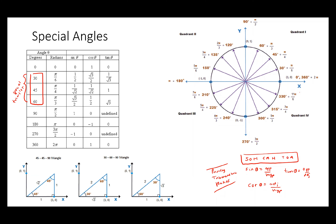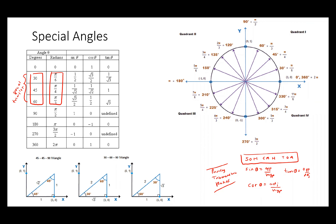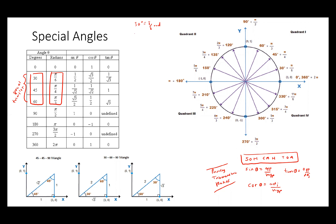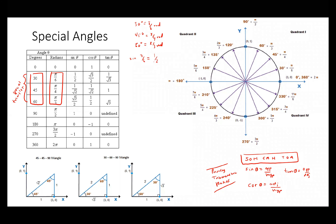I want to show you how to use the unit circle. These angles have specific values. Because we talked about radian measurement of angles, this is what we're going to be mainly focusing on. So 30 degrees is π/6 radians, 45 degrees is π/4 radians, and 60 degrees is π/3 radians. Hopefully you understand how to convert from degrees to radians.